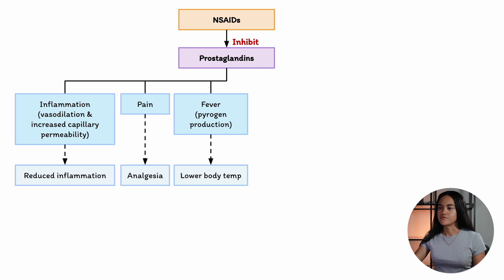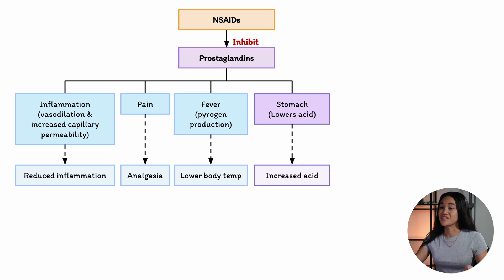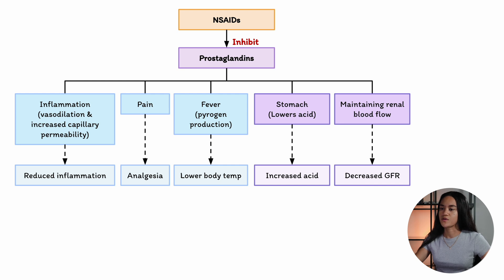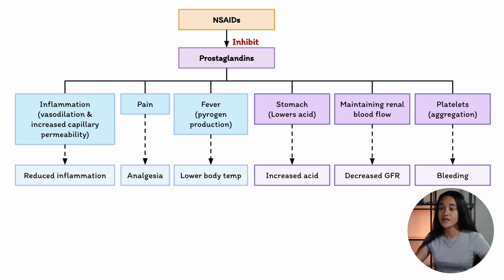While NSAIDs are effective for treating inflammation and pain, prostaglandins also have important roles in normal body functions, which can lead to side effects. For stomach protection, prostaglandins help protect the stomach lining by reducing acid secretion and increasing mucus production, so blocking them can lead to stomach irritation or ulcers. They also maintain blood flow to the kidneys, so NSAIDs may reduce this, potentially causing kidney issues, especially in people with pre-existing conditions. They also help regulate platelet aggregation, so NSAIDs can affect blood clotting and increase the risk of bleeding. Prostaglandins also help in processes like uterine contraction, so NSAIDs may interfere with these actions.